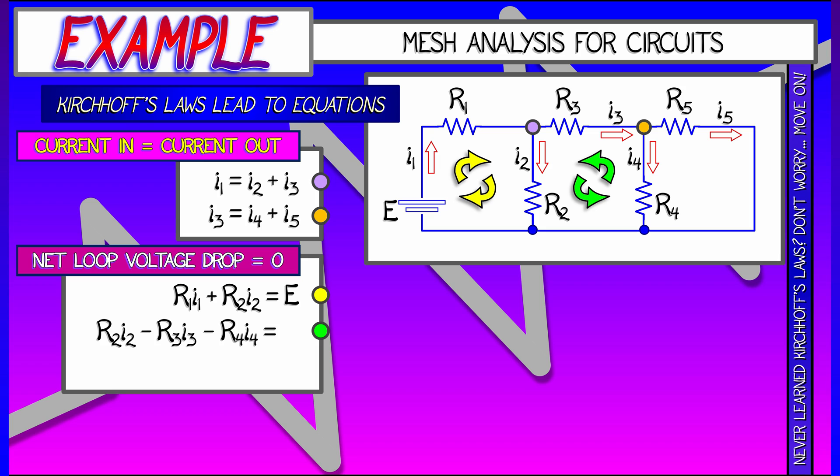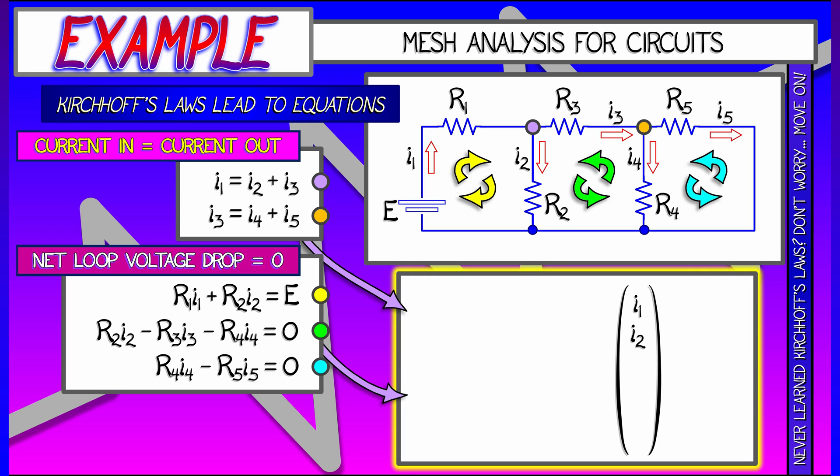Now you apply the same thing to the two other loops that are involved. Again, you get two other equations. On the right-hand side, you're going to get zero because there are no batteries in those loops. And on the left-hand side, you're going to get currents times resistances, maybe with minus signs depending on the direction the current is pointed.